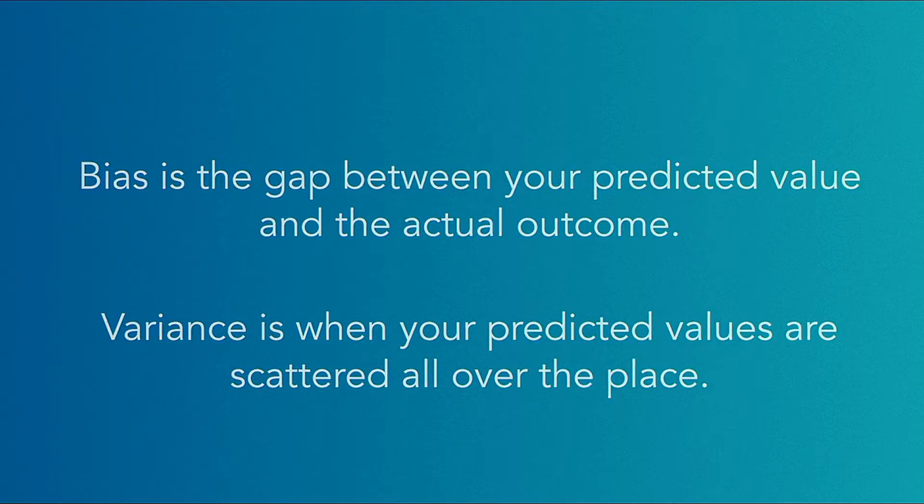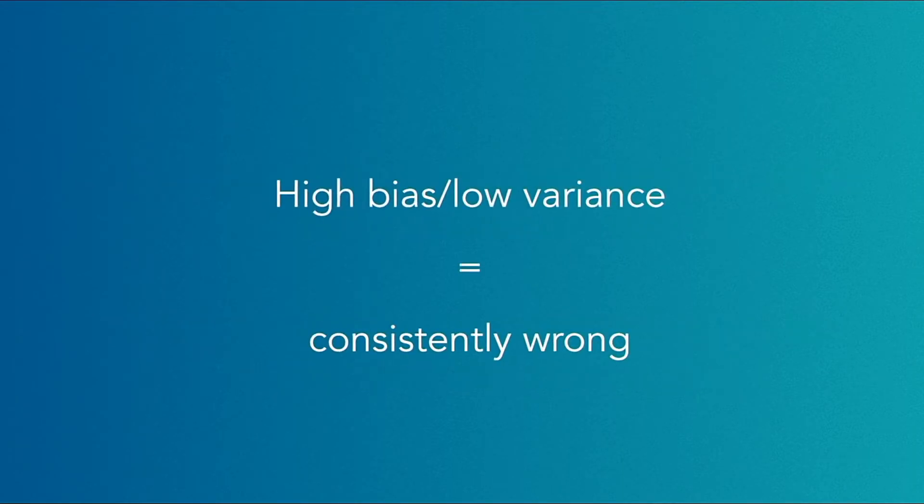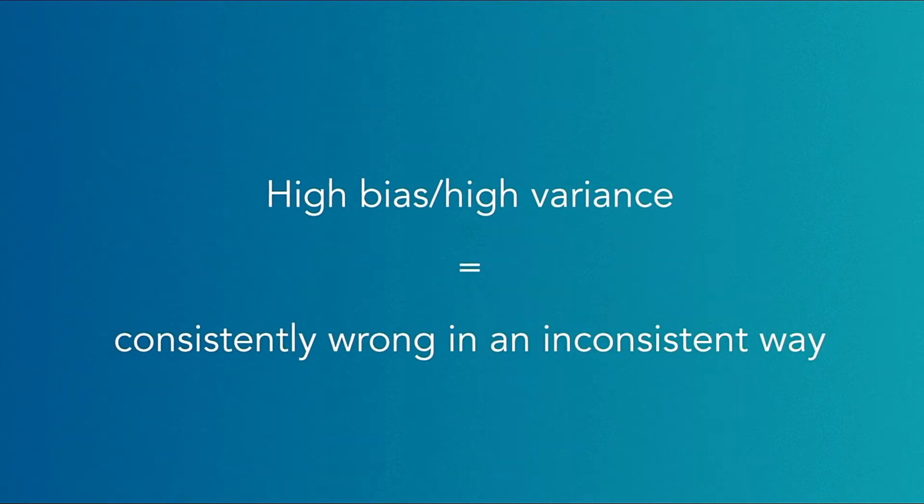You can have a high bias and a low variance. In that case, your predictions are consistently wrong. But even worse, you can have a high bias and a high variance. That's when you're consistently wrong but in a very inconsistent way.